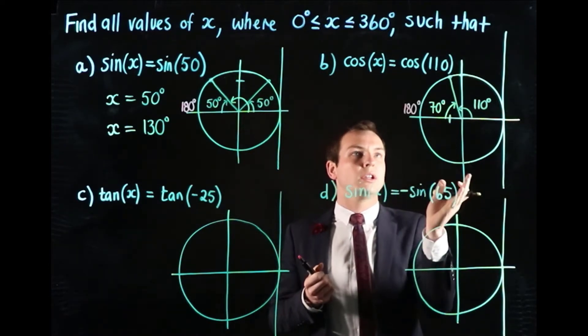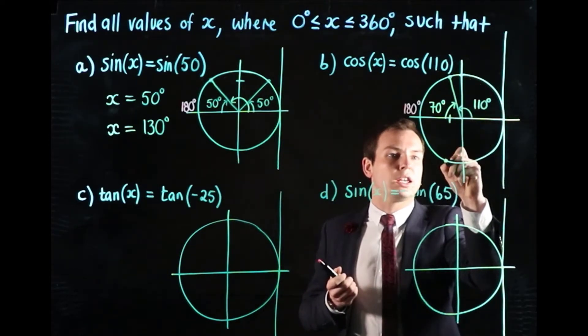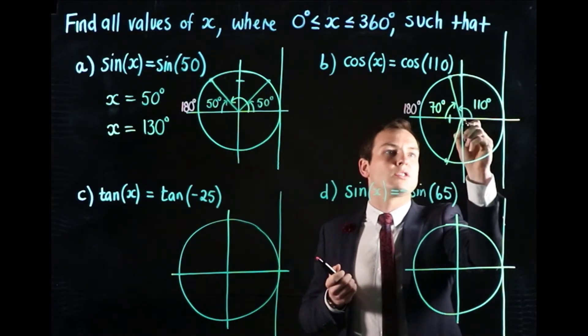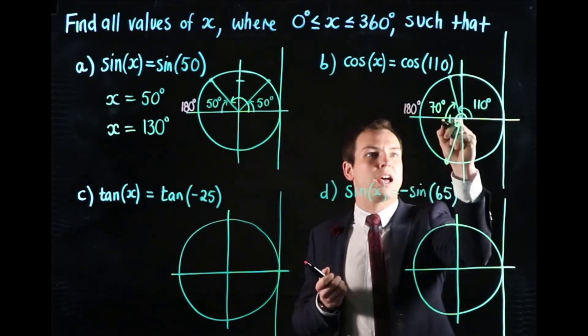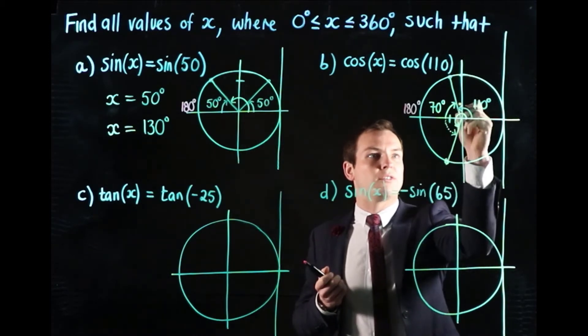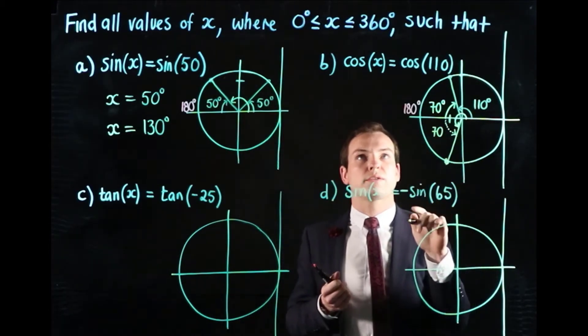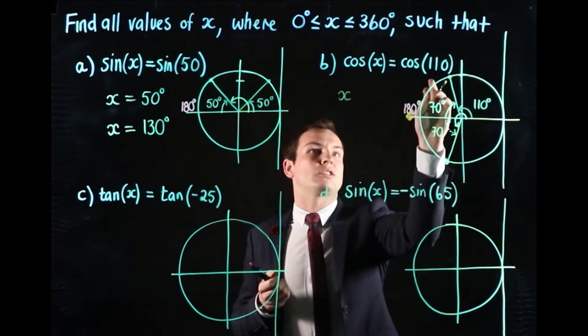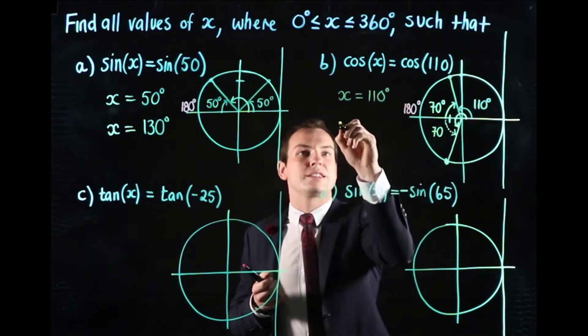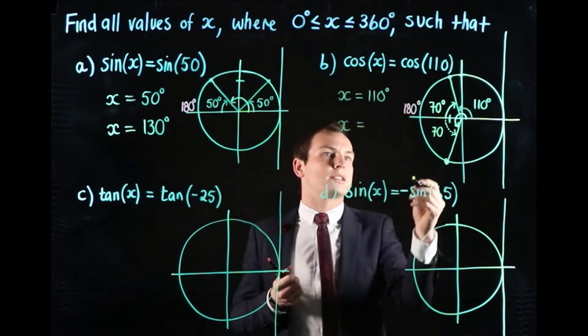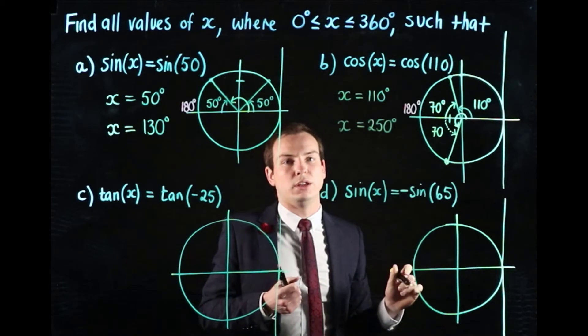For cosine, this has an x-value about here. We want another angle x in that unit circle that gives the same x-value, so we would need to be down at this position here. To get there, we'd go all the way around, which would be 180 plus the same 70 degrees, which gives us 250. So the two values for x are: first, x equals 110, and the second value is x equals 180 plus 70, which is 250 degrees.